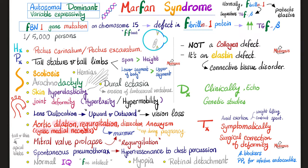Marfan syndrome is autosomal dominant. Features include pectus carinatum or excavatum; tall stature with arm span greater than height and lower body segment taller than upper; scoliosis; hernias; arachnodactyly; hyperelastic skin; dural ectasia, which can erode the lumbosacral vertebrae; joint hyperlaxity and hypermobility; and lens subluxation or dislocation upwards and outwards, leading to myopia and retinal detachment.